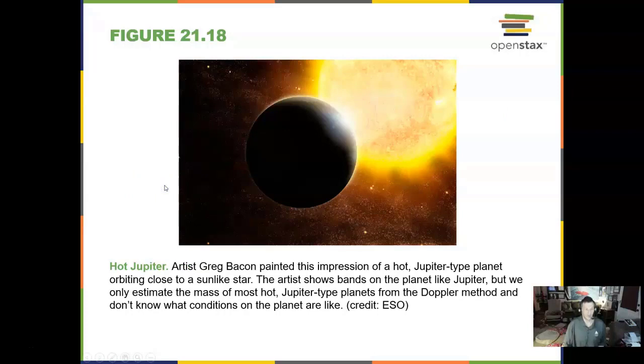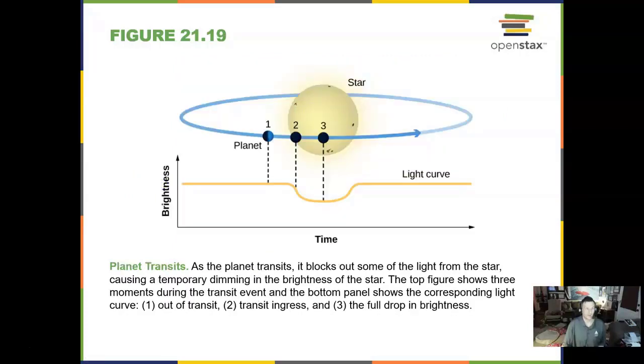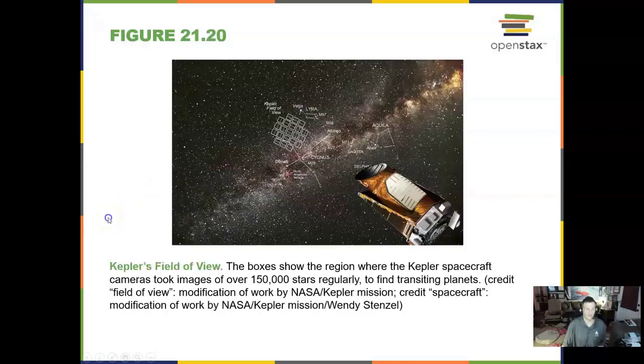We see a lot of hot Jupiters, hot massive planets. We can see planets going around other stars and they go in front and cause a transit. We have seen that with Venus going around the sun.